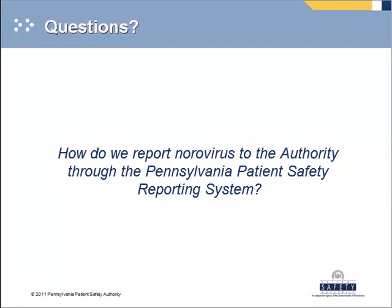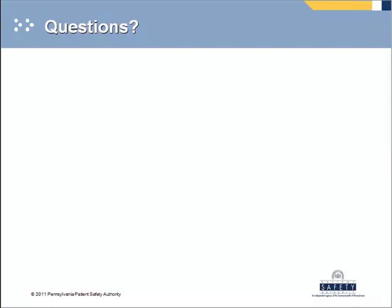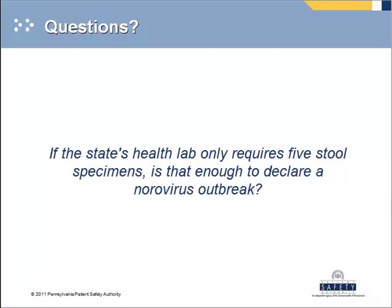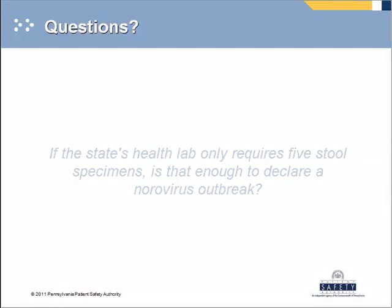The next question: the state health lab only requires about five stool specimens — is that enough to call it a norovirus outbreak if you're not certain it's norovirus? Since it takes a long time to get lab results, remember you can diagnose an outbreak using the Kaplan criteria — the clinical criteria for early detection. You can call it norovirus if it follows the Kaplan criteria; this helps you get a handle on prevention right away and provides a basis for conversations with your administrators. Many people with symptoms won't be individually tested, and if you wait weeks for lab results, the outbreak could be all over your facility.